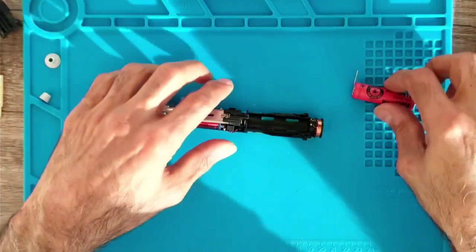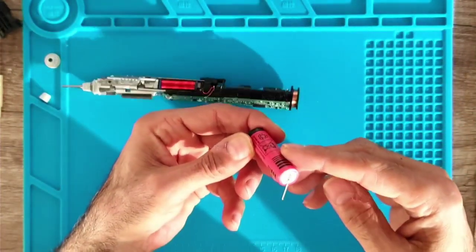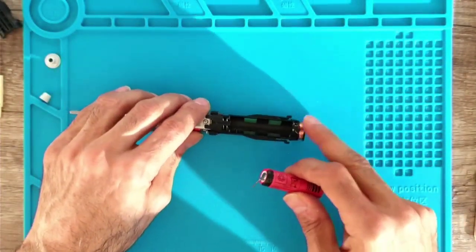Now I'm going to put the battery in and solder it. The negative side is towards the charging coil.